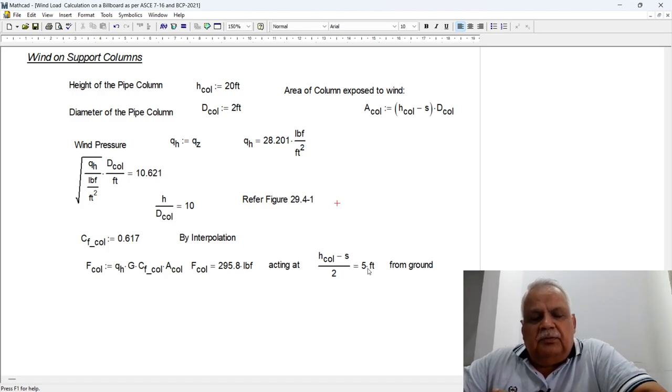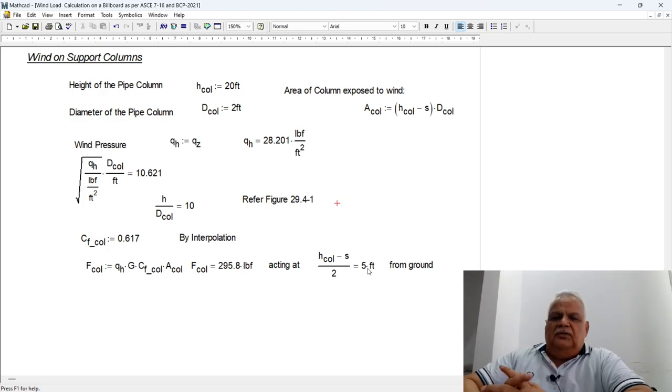You have to design the column support itself accordingly. Then, very important is the frame to support the billboard. That frame should also be designed properly.